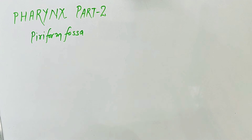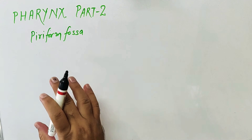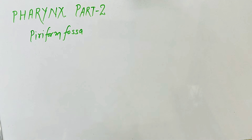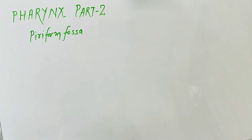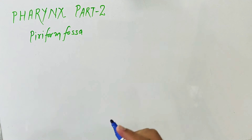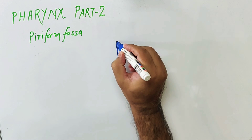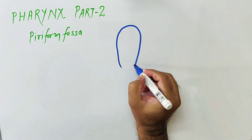Now we'll discuss the pharynx part 2. In this part we'll discuss about the piriform fossa. In part 1, in relation to the laryngopharynx, we discussed two important things: the laryngeal inlet and the piriform fossa. Now we'll discuss the piriform fossa in detail. First of all, we'll make a diagram.